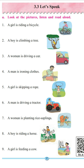Number 6. A man is driving a tractor. What is the man doing? The man is driving a tractor. So the action happening is driving. The verb is driving.